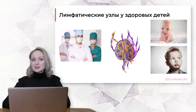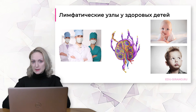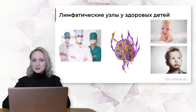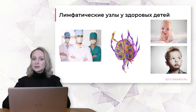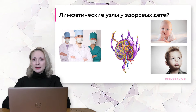Прежде чем говорить непосредственно о лимфаденопатиях, вспомним, какие же нормальные допустимые размеры лимфатических узлов у детей. На протяжении всего периода детства допустимыми считаются размеры лимфатических узлов примерно 1 см по результатам УЗИ или компьютерной томографии. Если мы говорим о паховых лимфатических узлах, то допустимым размером является 1,5 см. Для эпитрохлеарных или кубитальных лимфатических узлов допустимые размеры – 5 мм.